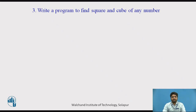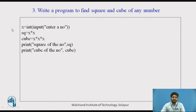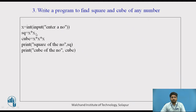Write a program to find the square and cube of any number. The program would be: x = int(input('Enter a number')). Square is a new variable equal to x into x — that is multiplying x with x. For cube, we use x three times. Then print 'Square of a number' and call the square variable, showing the output of the square.